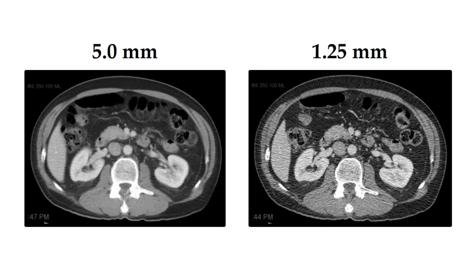Here's an example of the difference in the appearance of images reconstructed in the abdomen with five millimeter slices and 1.25 millimeter slices. The image to the left is the more traditional appearance of a CT abdomen, reconstructed with five millimeter slices. This is a larger slice thickness, but it is valuable for imaging the abdomen — it allows us to use lower radiation but still have less image noise.